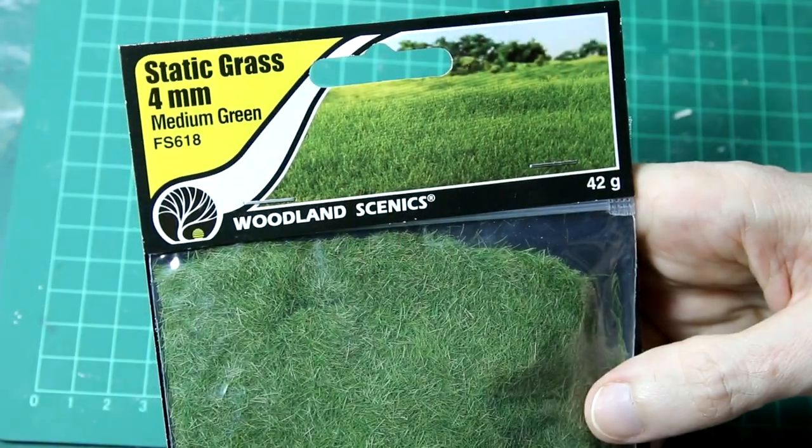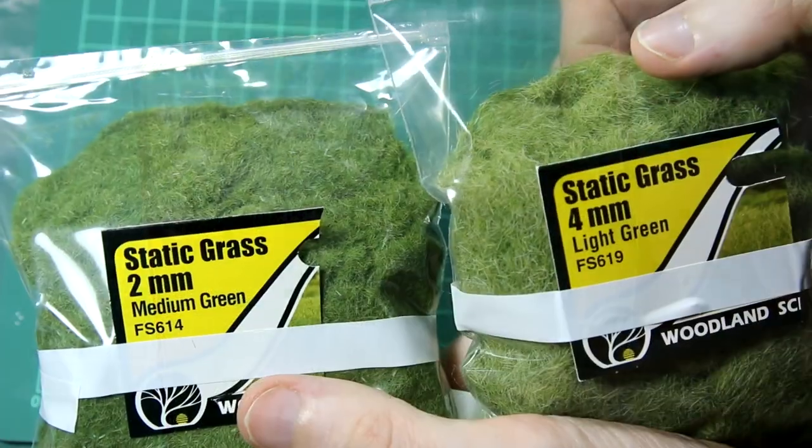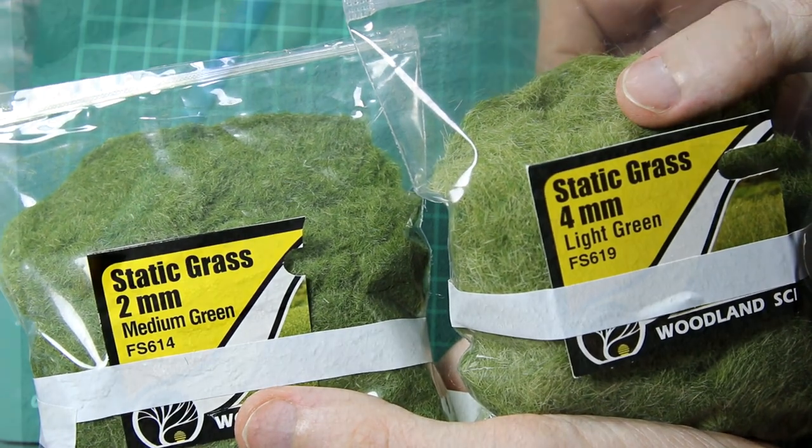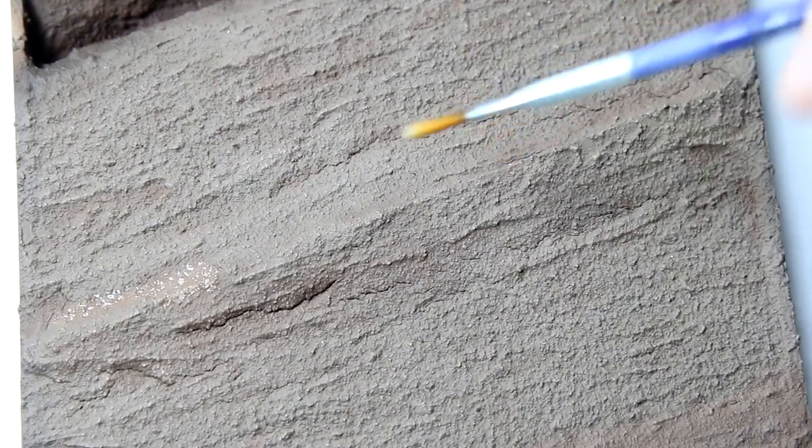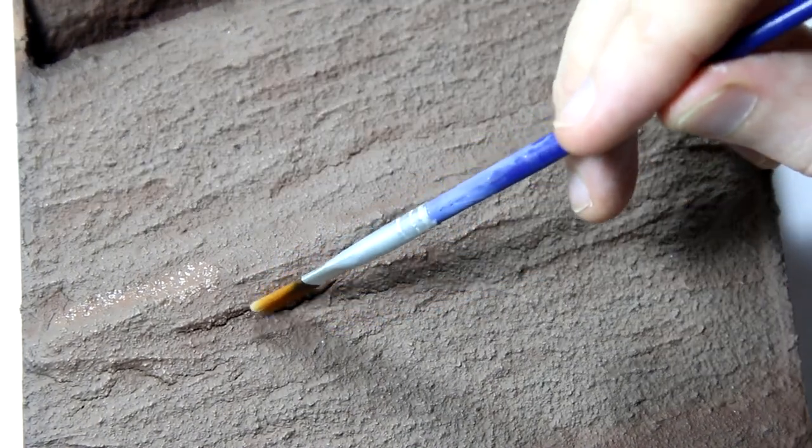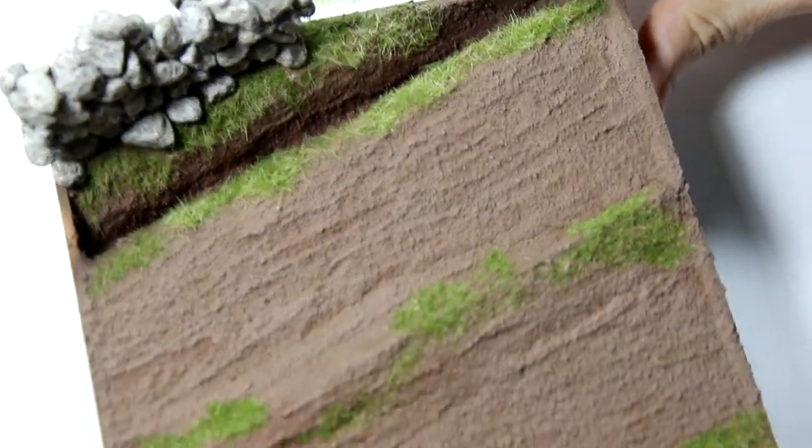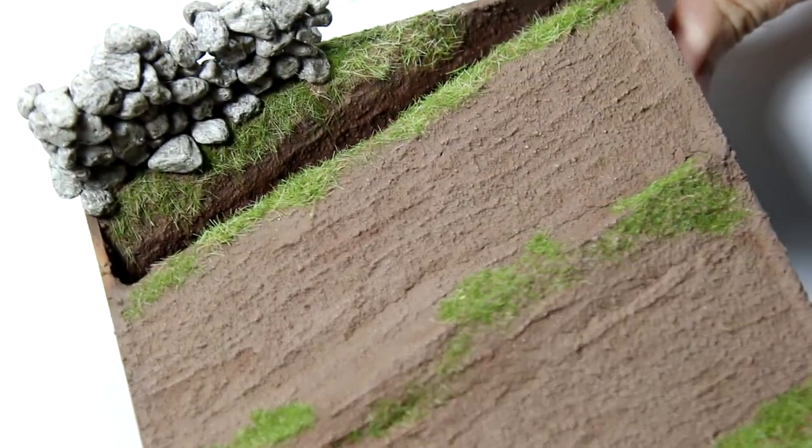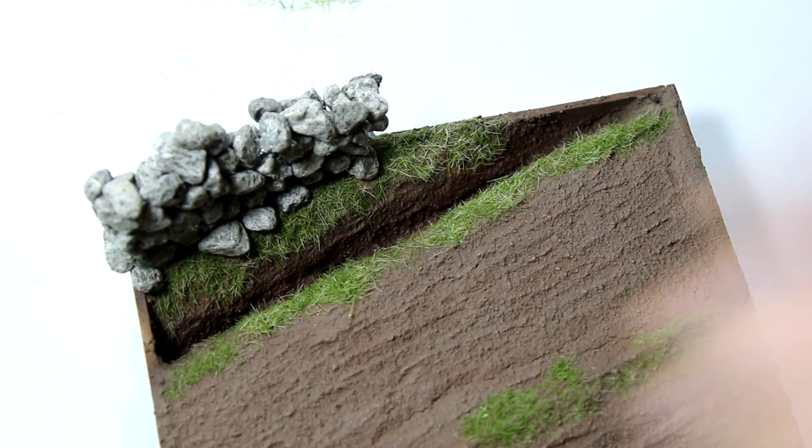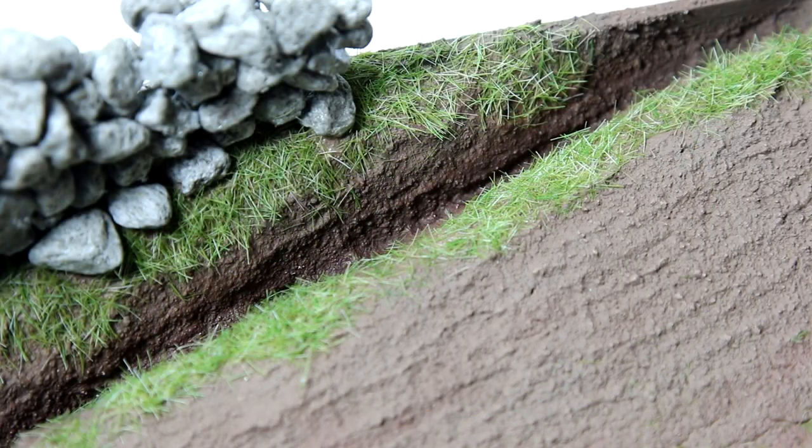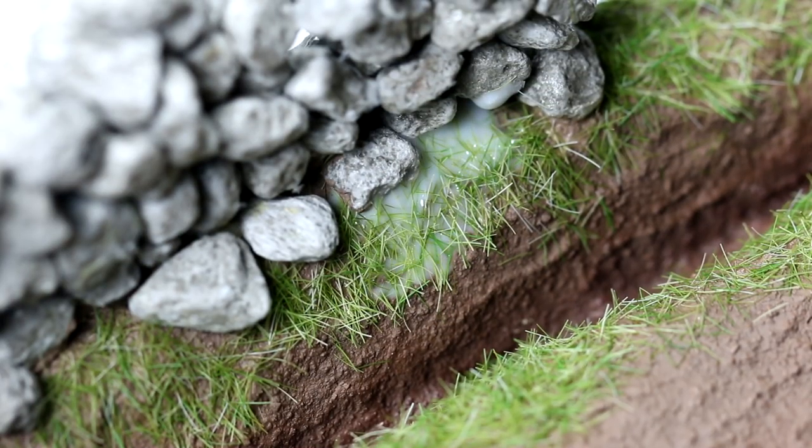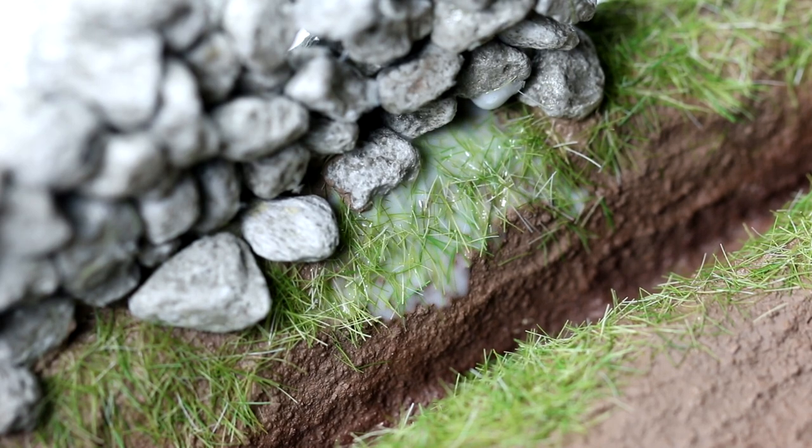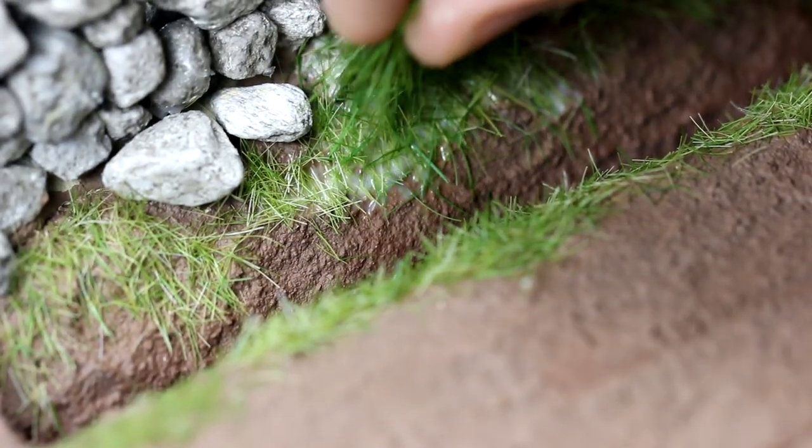The next step was static grass and for that I have a mix of 2mm and 4mm medium green and light green. I used some scenic glue in the middle and at the edges of the road to apply the 2mm grass. I used a static grass applicator for most of this, except for the grass that's directly under the wall because I wanted a much rougher appearance to that. And then I added some more scenic glue, maybe a little bit too much. And then I just threw on some of the longer darker grass to give a rough verge kind of appearance to this area.